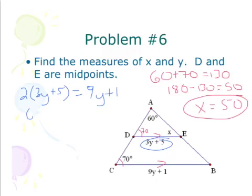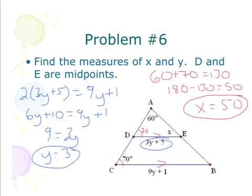So I distribute I get 6Y plus 10 equals 9Y plus 1. So I'm going to get 9 equals 3Y and we get Y equals 3. Bippity boppity we're done.